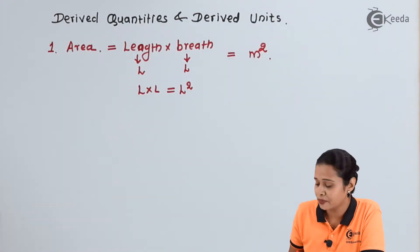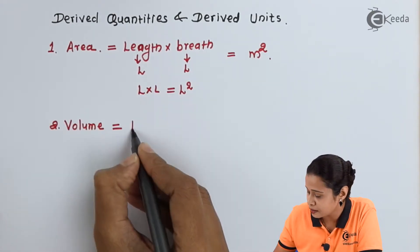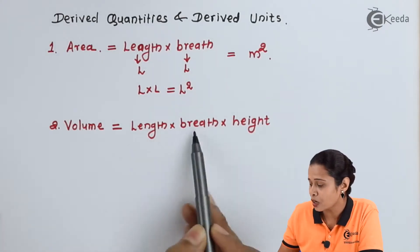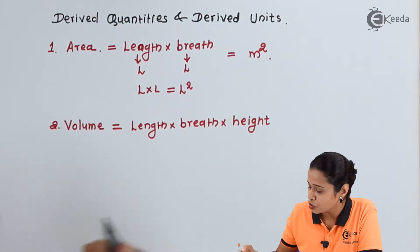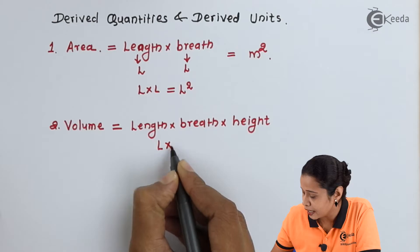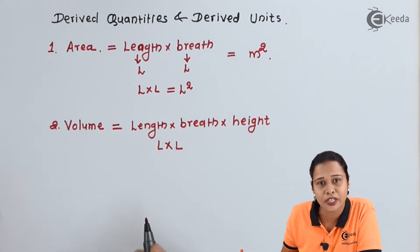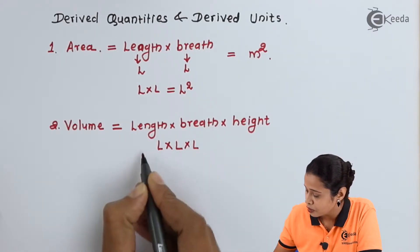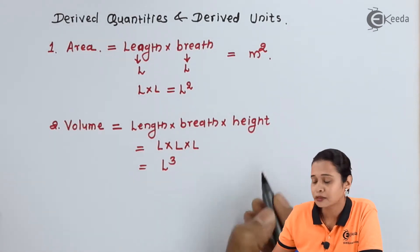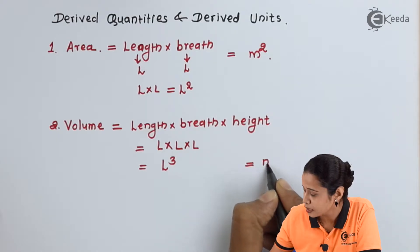The second quantity we will take is volume. The formula of volume is length into breadth into height. All three quantities can be expressed in terms of length. Breadth and height can both be taken as L. So the formula is L cubed, and since the unit of length is meter, the unit of volume is meter cube.